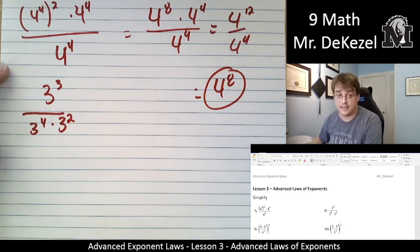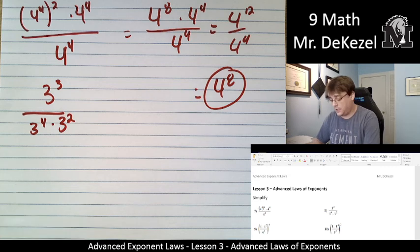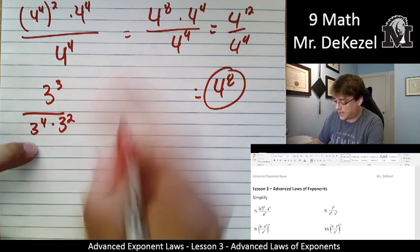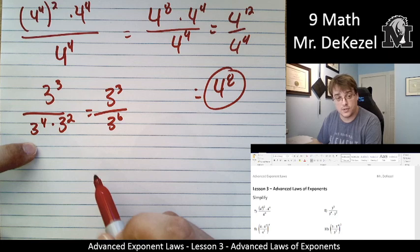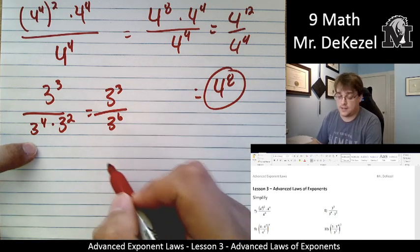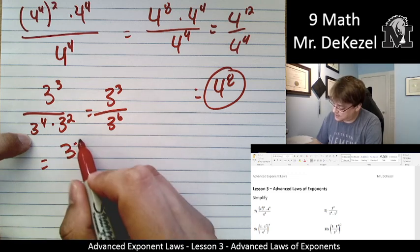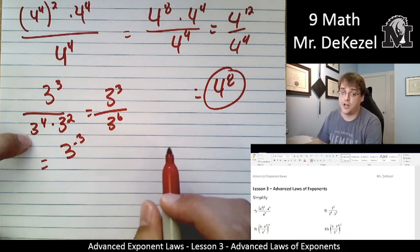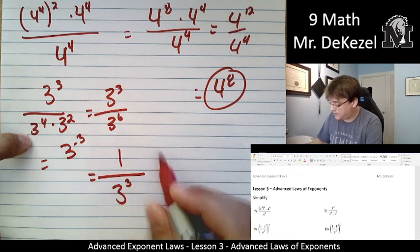There are no brackets, no exponents of exponents, so we can move right along. For the bottom, when we have four and two as exponents and the bases are the same and they're multiplied, we're going to add them: three to the power of three over three to the power of six. We're going to subtract because they're divided, so we have three to the power of negative three. Our final answer — we're going to flip that onto the denominator of a fraction, so that's one over three to the power of three.